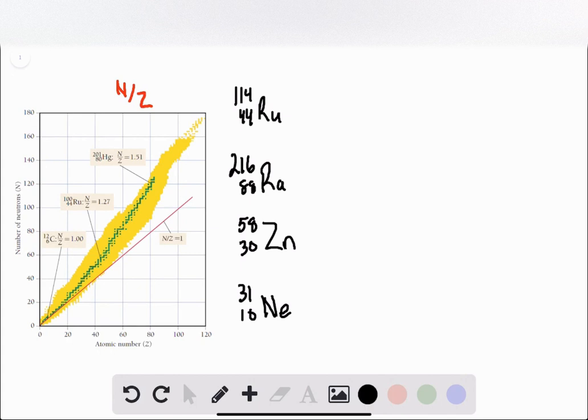The reason for that, as I've included in this graph, the green species represent the stable isotopes for different elements and the yellow dots represent unstable isotopes. And what you can see is that the neutron to proton ratio is a good way to indicate whether or not a species will be stable.